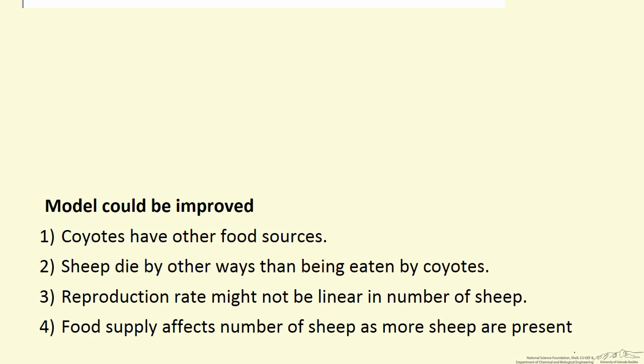There's nothing that says a reasonable model has reproduction rate linear in the number of sheep instead of, say, squared in the number of sheep.